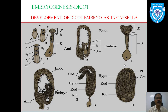The lower cell is called the suspensor initial, and the upper cell is called the embryonal initial. As the name indicates, the part facing toward the micropylar end is known as the suspensor initial.